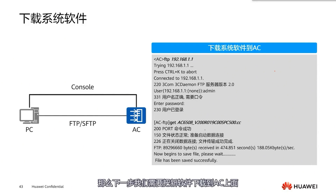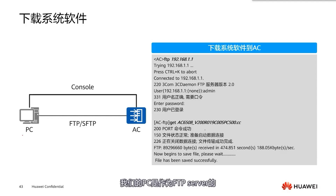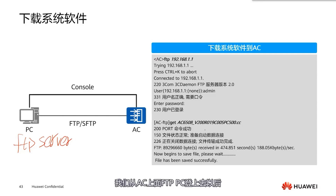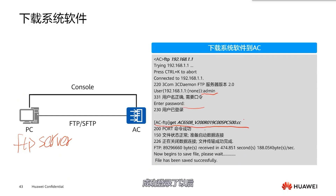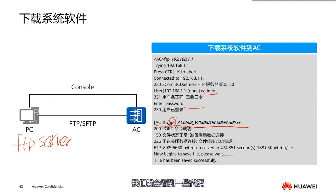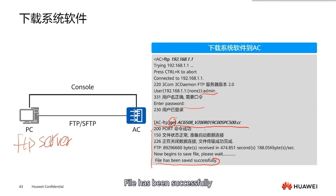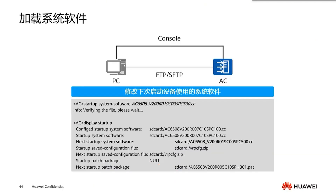The next step is to download the new software to the AC. In our example, the PC acts as the FTP server and the AC is the client. After FTP-ing into the PC from the AC, enter the correct username and password to log in successfully. Once logged in, we use the GET command to download the latest software version. Upon executing this command, you will observe some processes and finally receive the notification that the file has been saved successfully, indicating the transfer is complete.